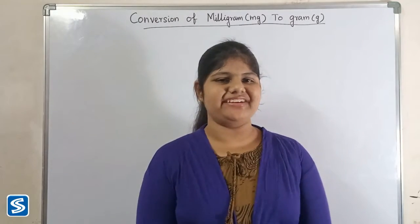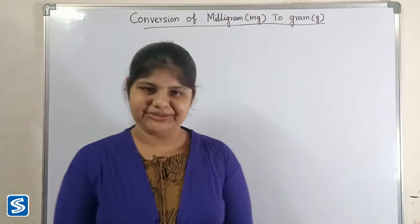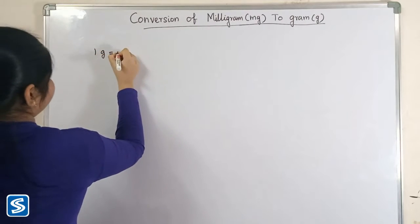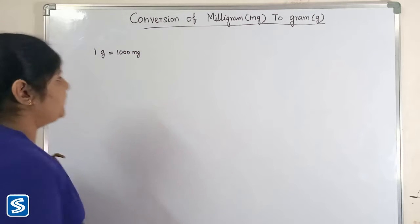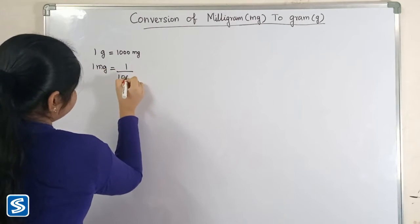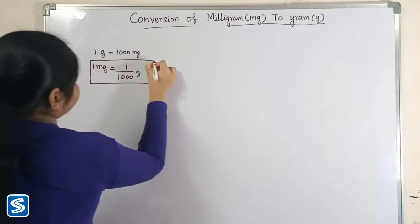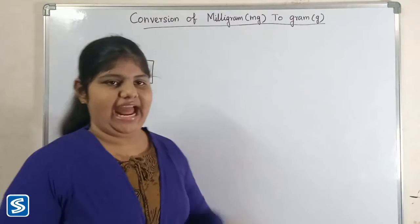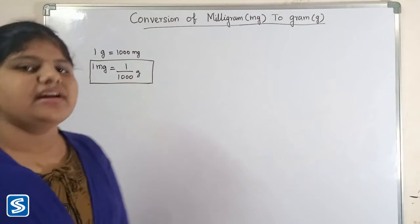Hi friends, welcome to Swami's channel. In this video, I am going to teach how to convert milligrams into grams. We already know that one gram is equal to 1,000 milligrams, so one milligram is equal to one by thousand grams. The formula for converting milligrams into grams is: one milligram equals one divided by one thousand grams.